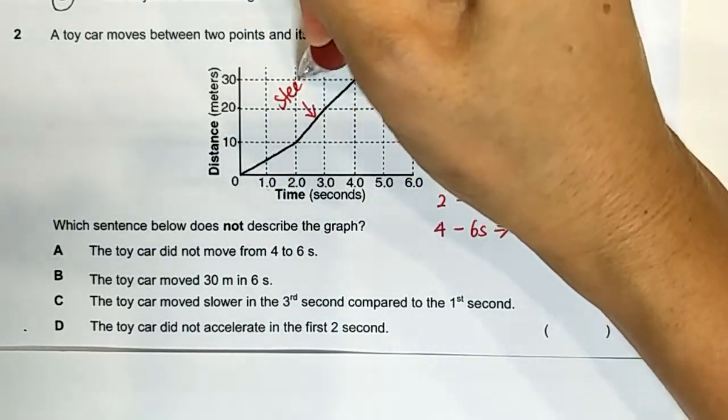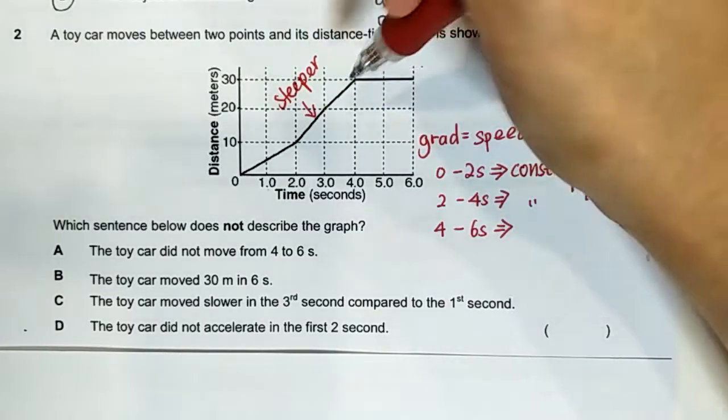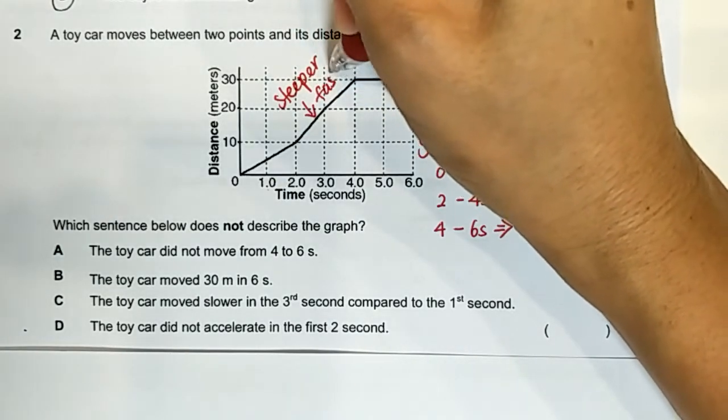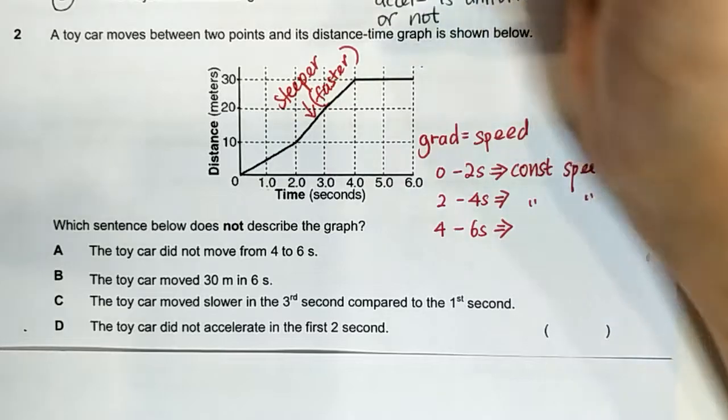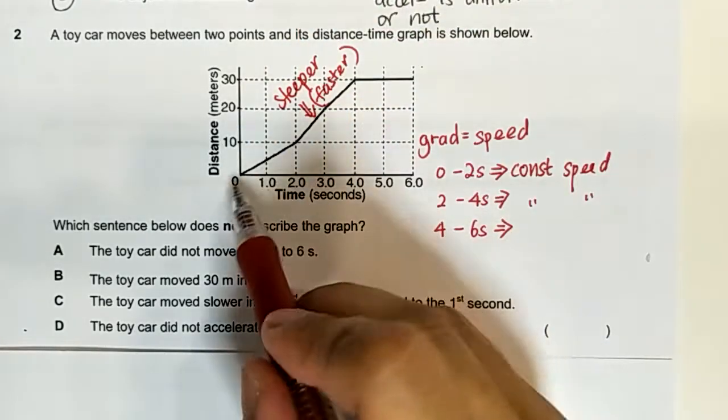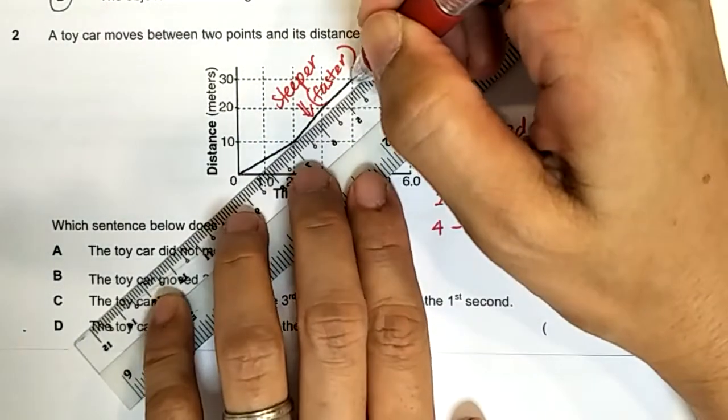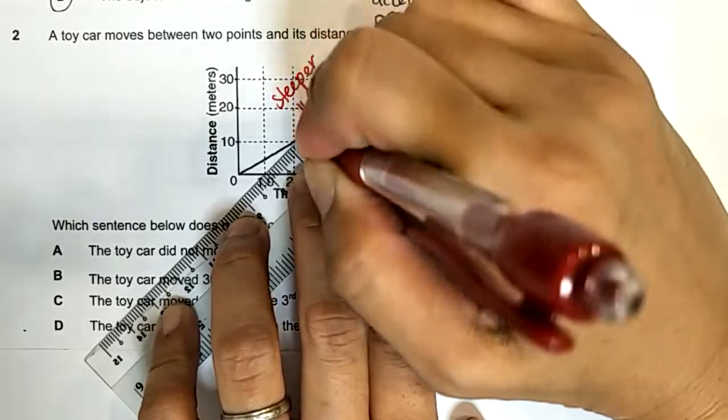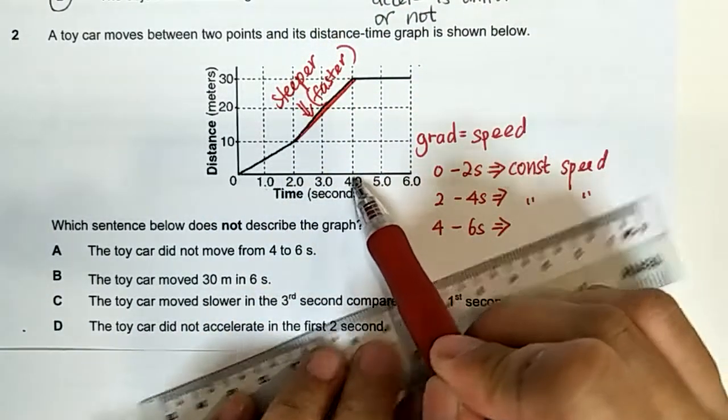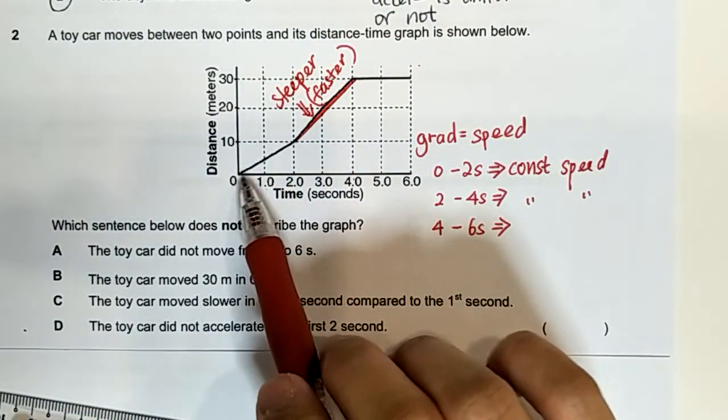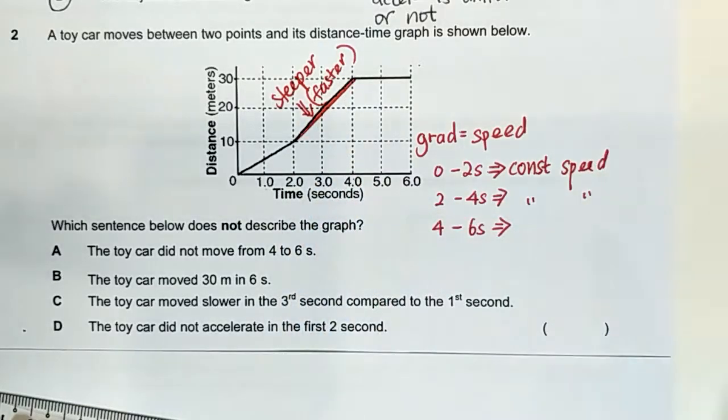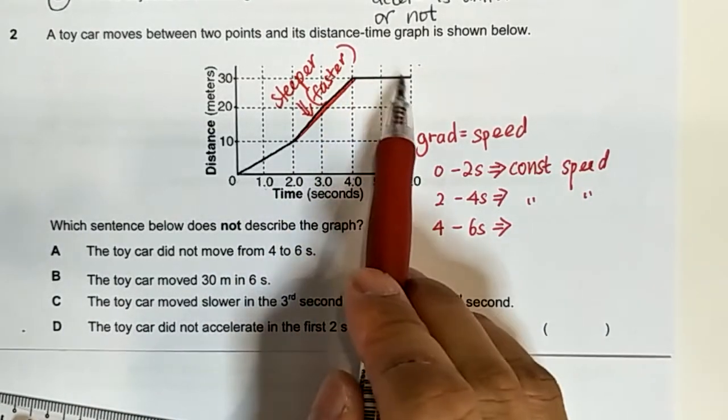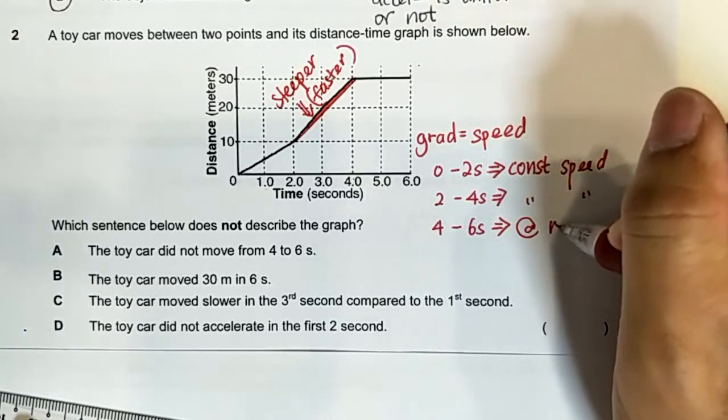Which means that it is moving faster compared to this part here. So from 2 to 4 seconds it is moving faster than from 0 to 2 seconds because the graph is steeper. From 4 to 6 there's no change in distance therefore the object is at rest.